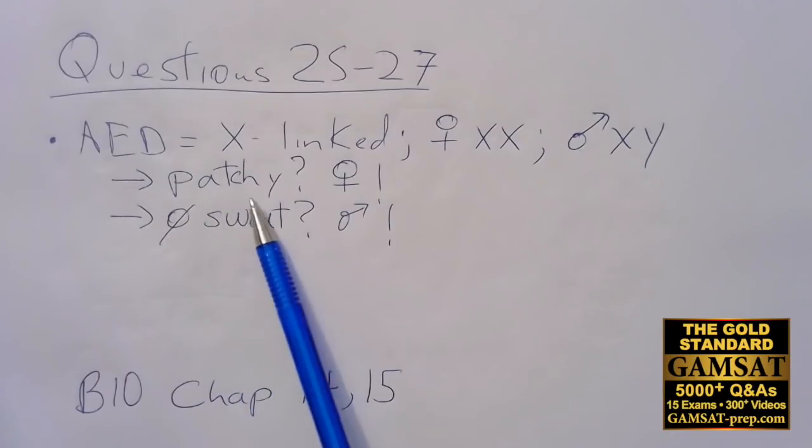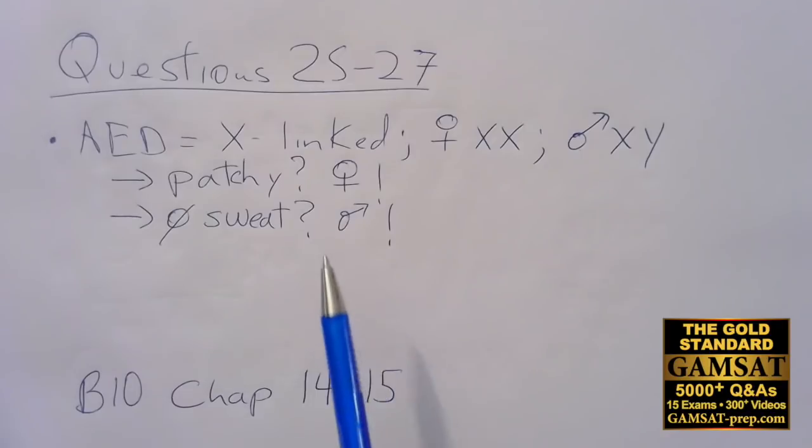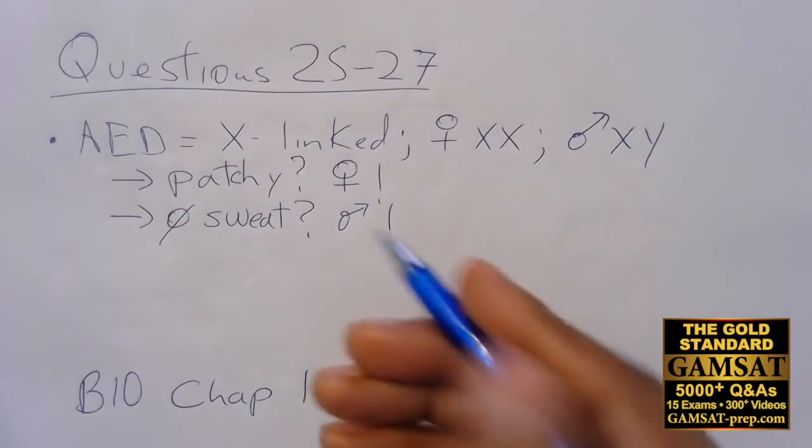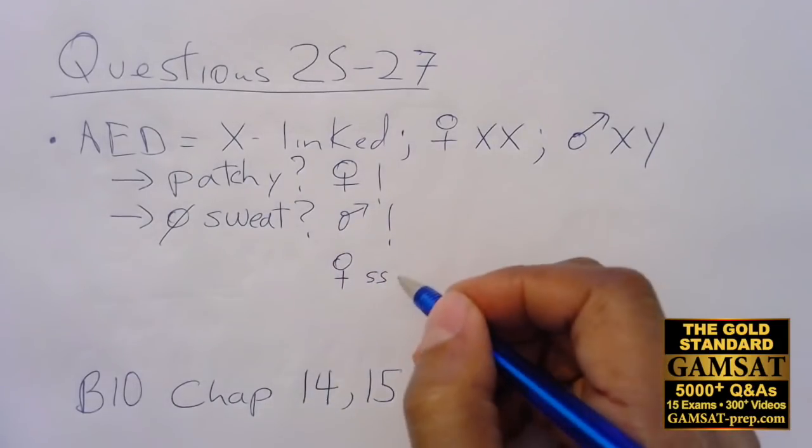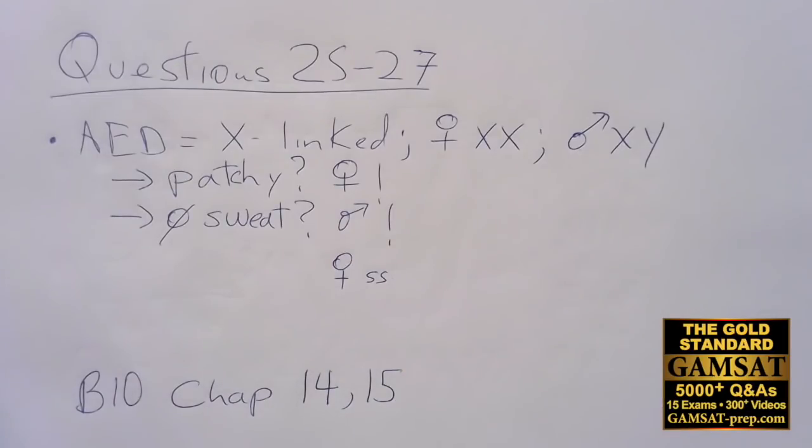If it's a patchy distribution, there's only one possibility and that's female. If it's no sweat glands at all, it's male. It's going to be very easy to have that for male, but I'll have to add women in there for the little s's, those are little s's not big s's. For female with homozygous recessive, yes.